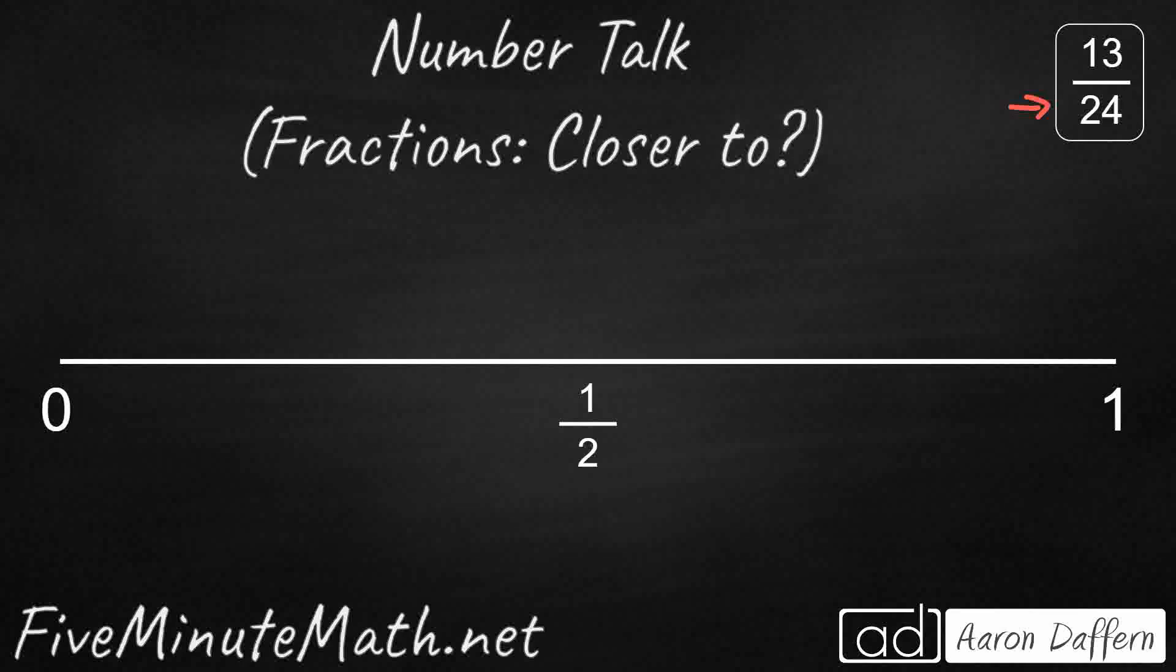It's actually pretty simple. 0 24ths is going to equal 0. We call it just the whole number 0, but 0 over any fraction - 0 8th, 0 10th, 0 3rd, 0 24th - it's all equal to 0.